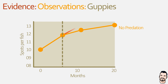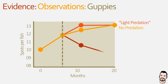The second group had Rivulus hartii added — a predatory fish that does not directly prey on guppies. Much like the no-predator group, the number of spots increased from 11.8 to 13, again due to more attractive males fathering more offspring. The final group had Crenicichla alta added, which is a voracious predator of guppies. In the presence of this predator, the number of spots decreased from 11.8 to 9.5 — a direct response as guppies undergo natural selection and microevolution, reducing spots in response to predation pressure.